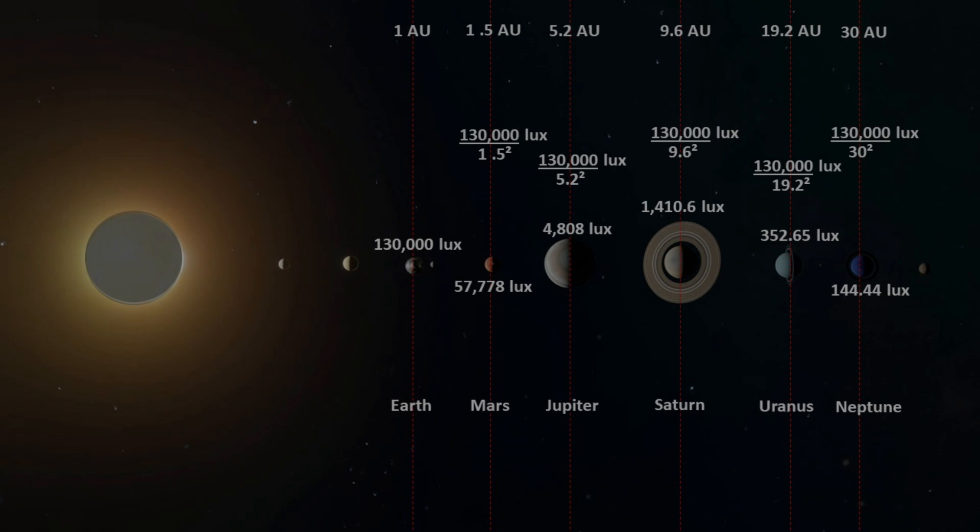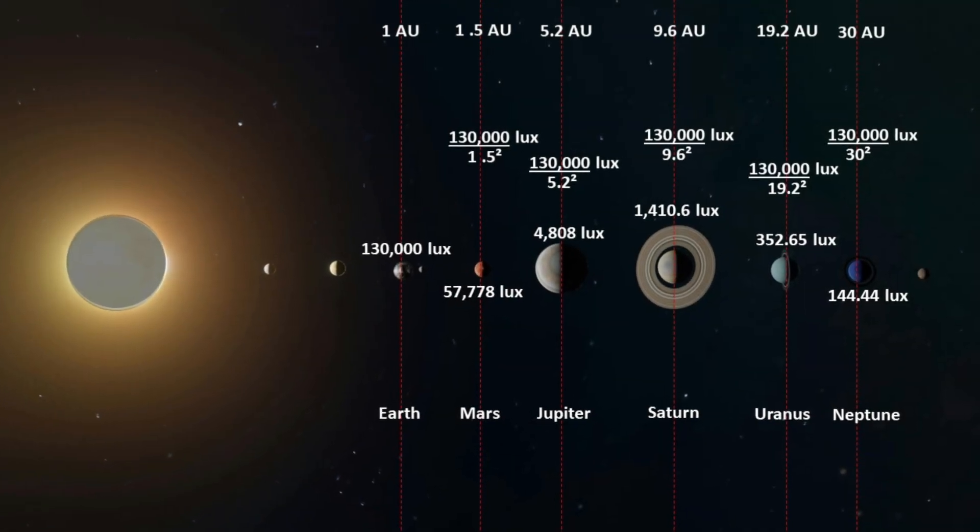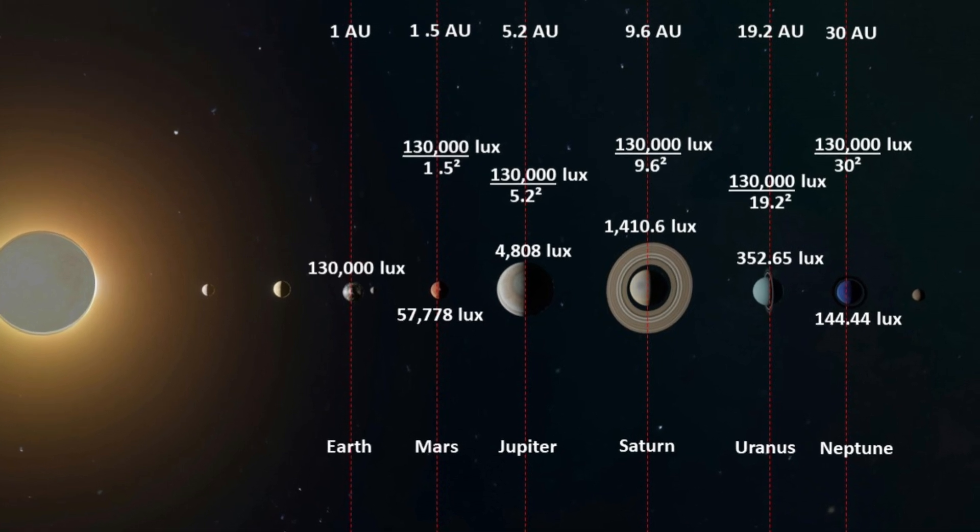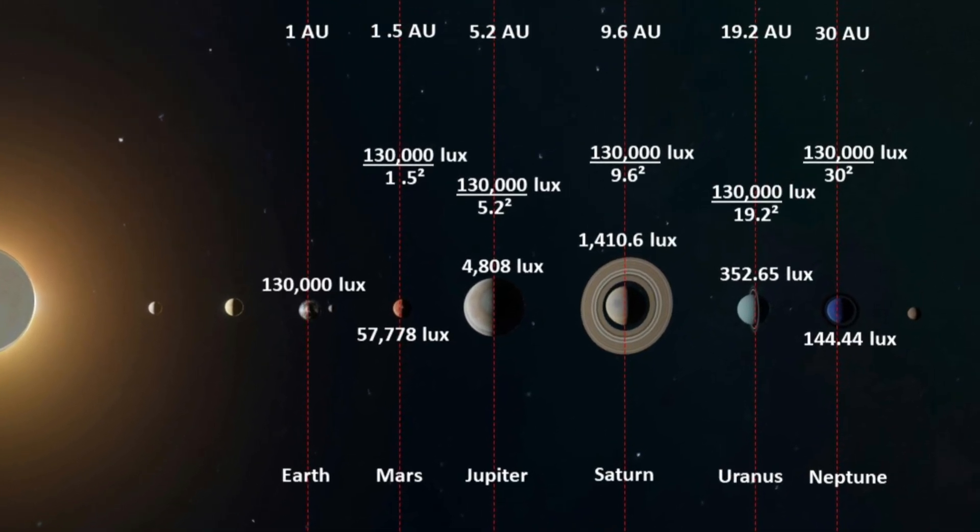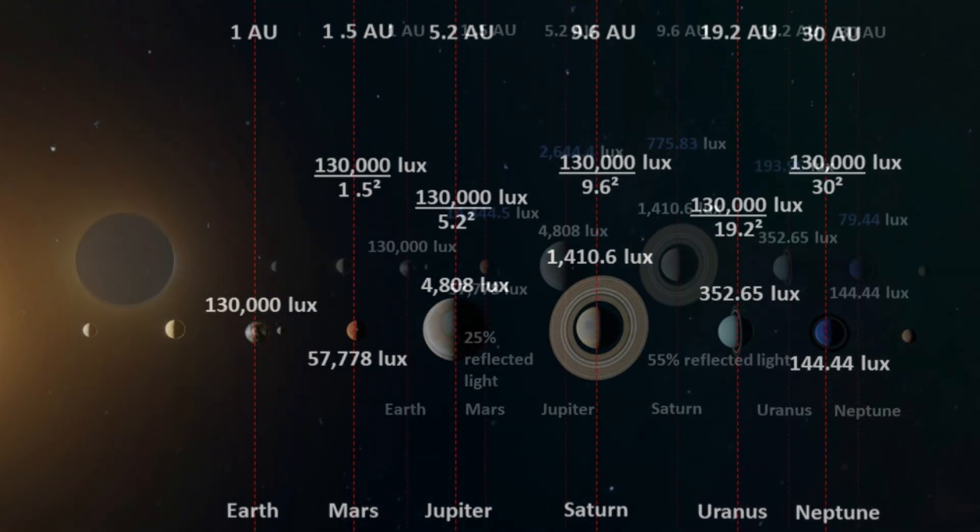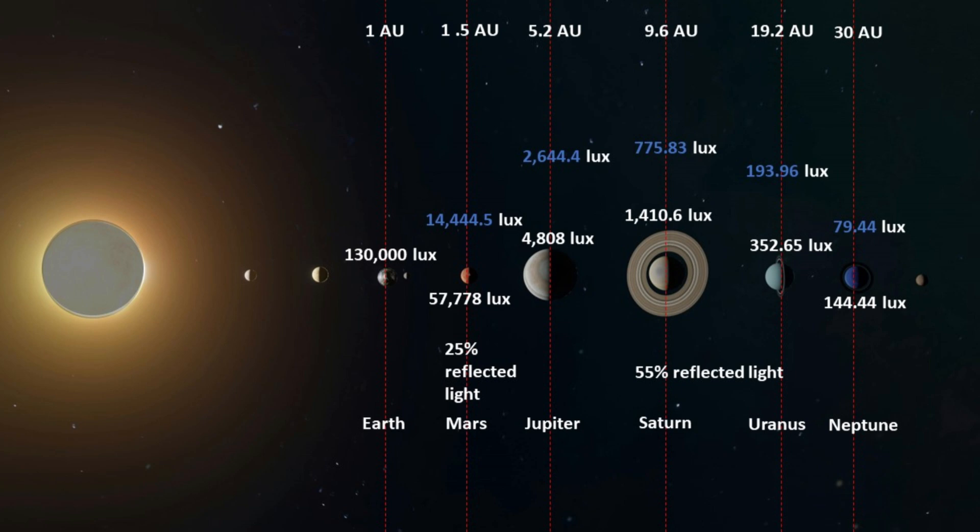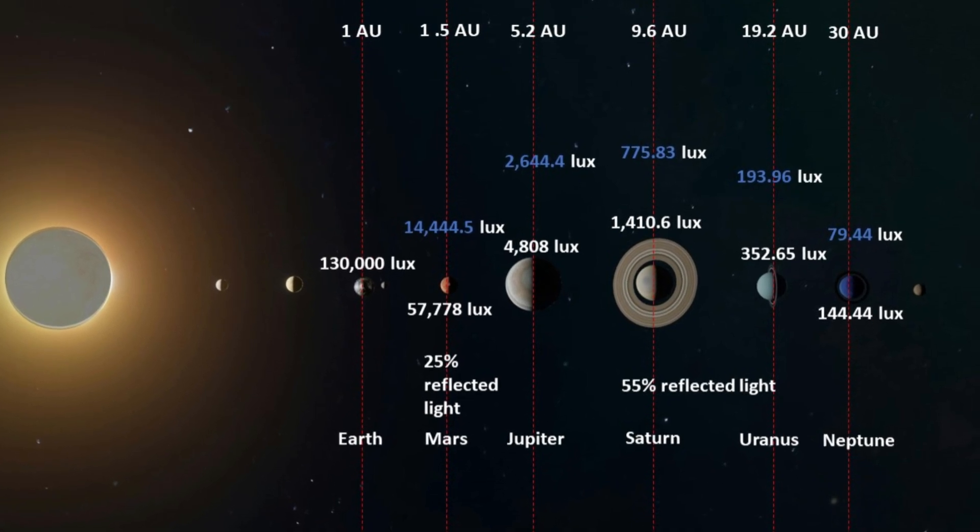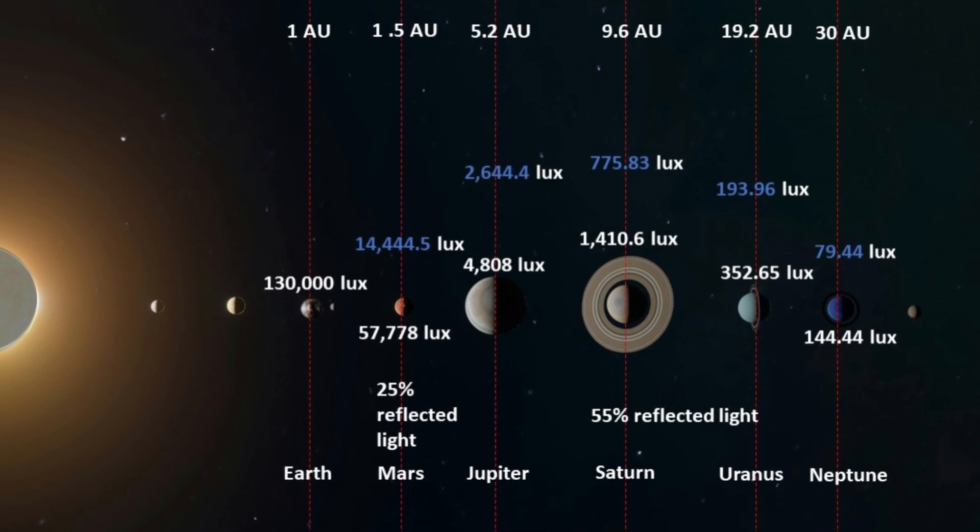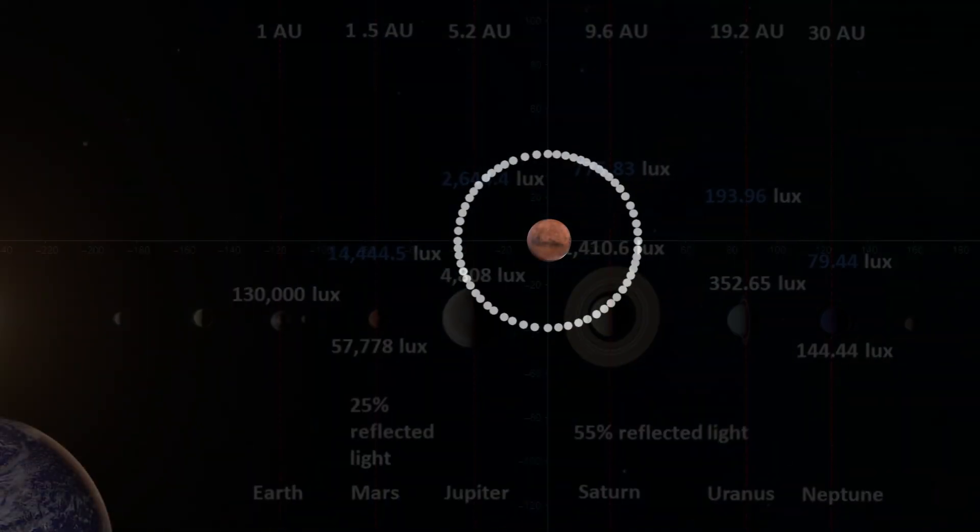At the planet's stated distances from the sun, we can use the inverse square law to work out the amount of light each of the planets will receive. Given the percentage of light each planet reflects, their distance from Earth, and the radius of each planet, we can work out how much of their reflected light reaches Earth and our eyes.